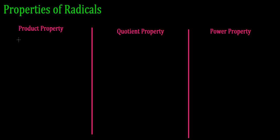Hello everyone, we're going to talk about the properties of radicals. The first property is the product property. This property says that the root of a product, like a times b,